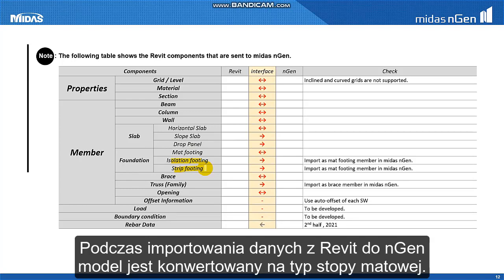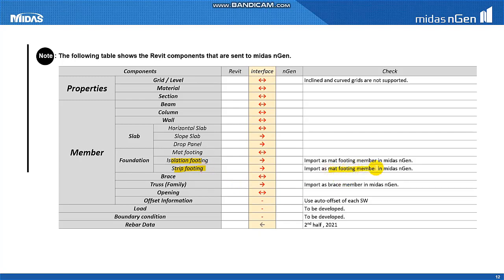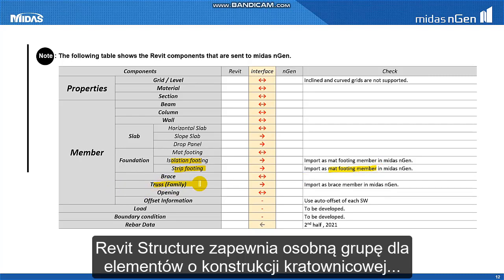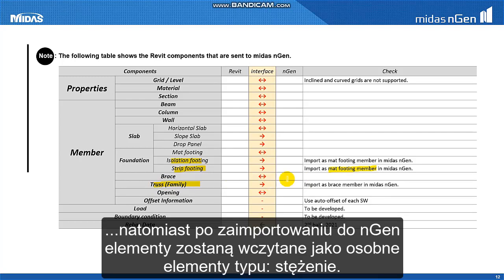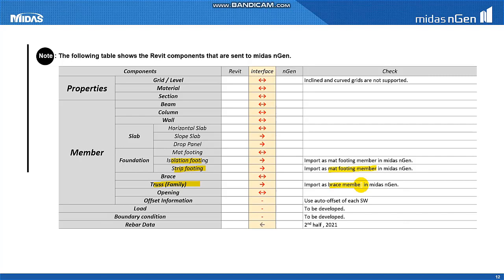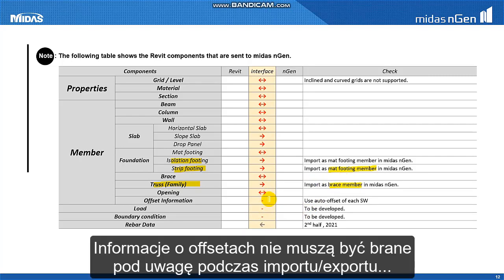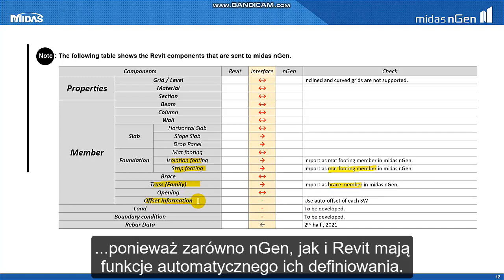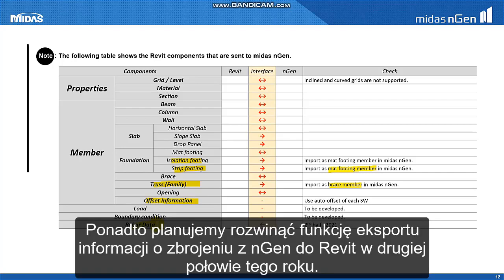When importing Revit data into Engine, the model is converted into the MAT footings type. Revit Structure provides the concept of a family format in truss structures, but when imported into Engine, it becomes individual brace members instead of the original format. Offset information does not need to be considered here because both Engine and Revit have automatic shape offset functions. Furthermore, a function to export Engine's reliability information to Revit is planned for the second half of this year.